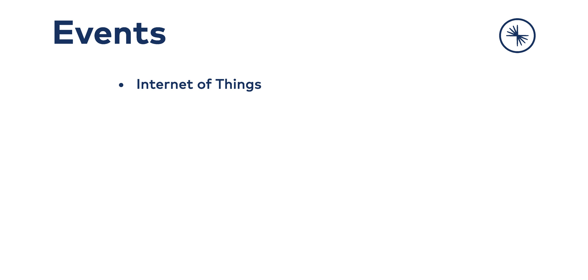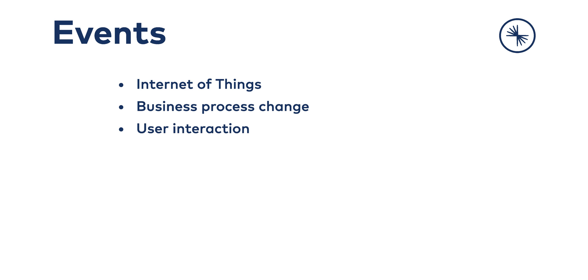An event can be other kinds of things. An event can be the change in the status of some business process — say an invoice becomes past due, well that's an event. An event can be some kind of user interaction: somebody mousing over a certain link on a screen or clicking on a thing — that's certainly an event. A microservice completing some unit of work and wanting to put the record of that somewhere — that's an event. All these things are events. They're just things that have happened combined with the description of what happened.